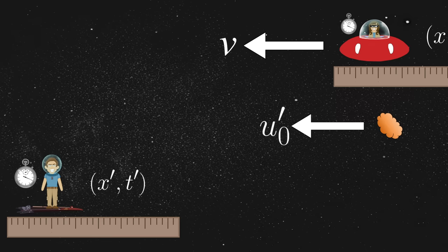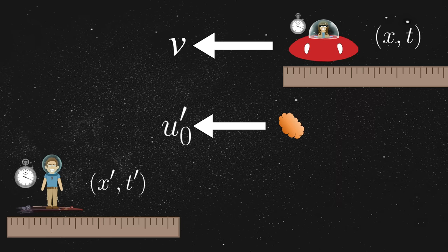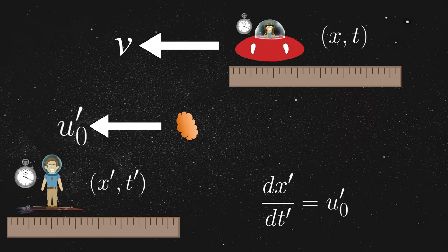Jim, however, is also moving with some constant velocity, v, relative to Annie, which means his measurement of the rock's velocity yields a different value. Thus, we have a slightly different expression for Jim, which is written as the derivative of x prime with respect to t prime is equal to u sub 0 prime.